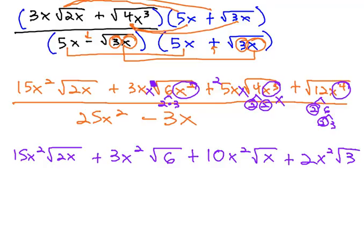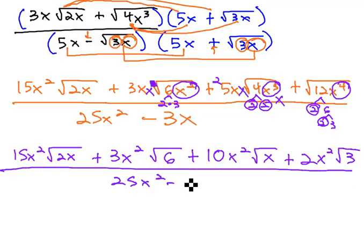So we end up with 15x squared, square root of 2x, plus 3x squared, square root of 6, plus 10x squared, square root of x, plus 2x squared, square root of 3, all over the 25x squared minus 3x.